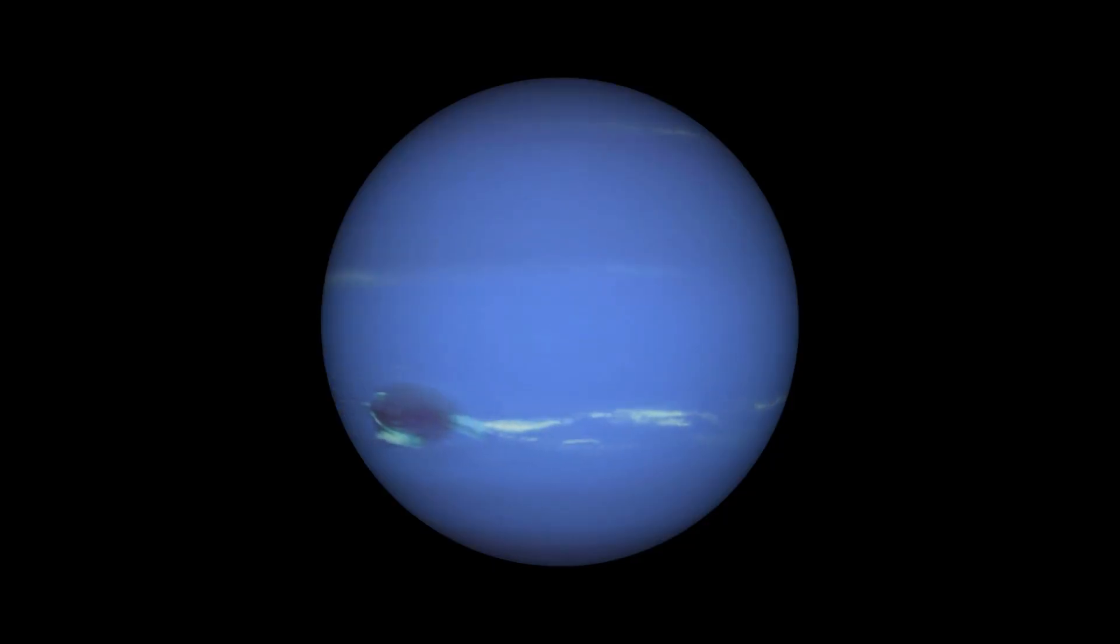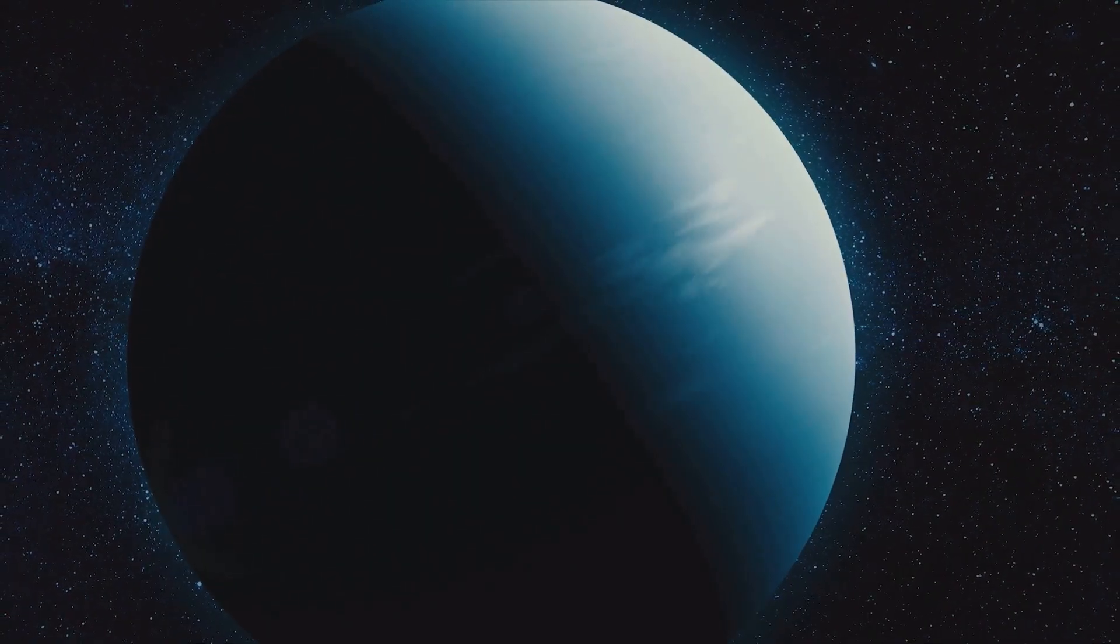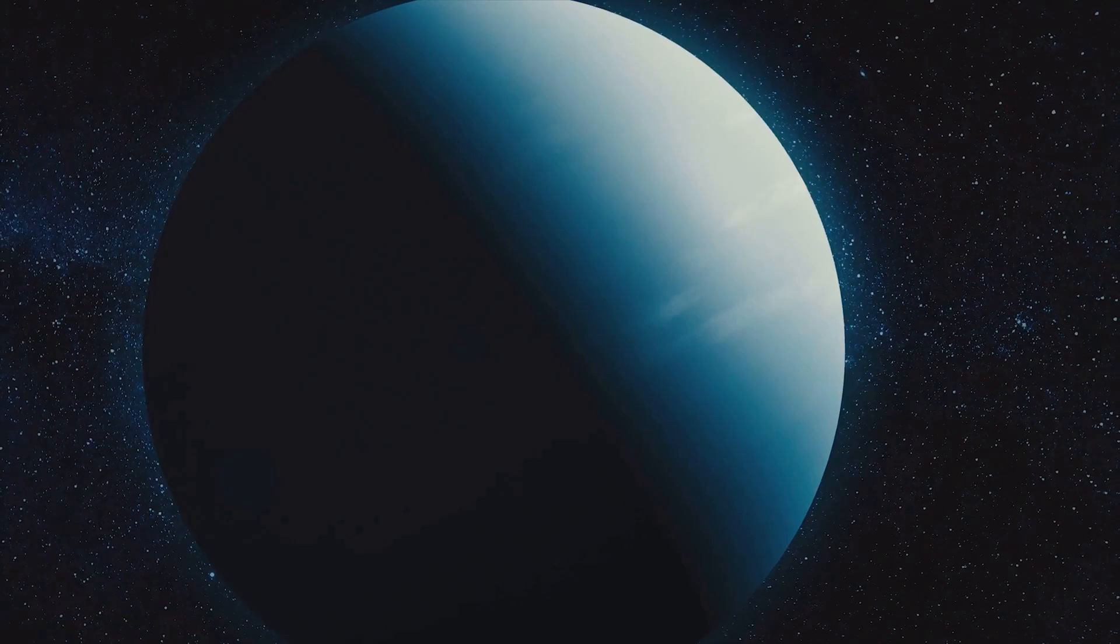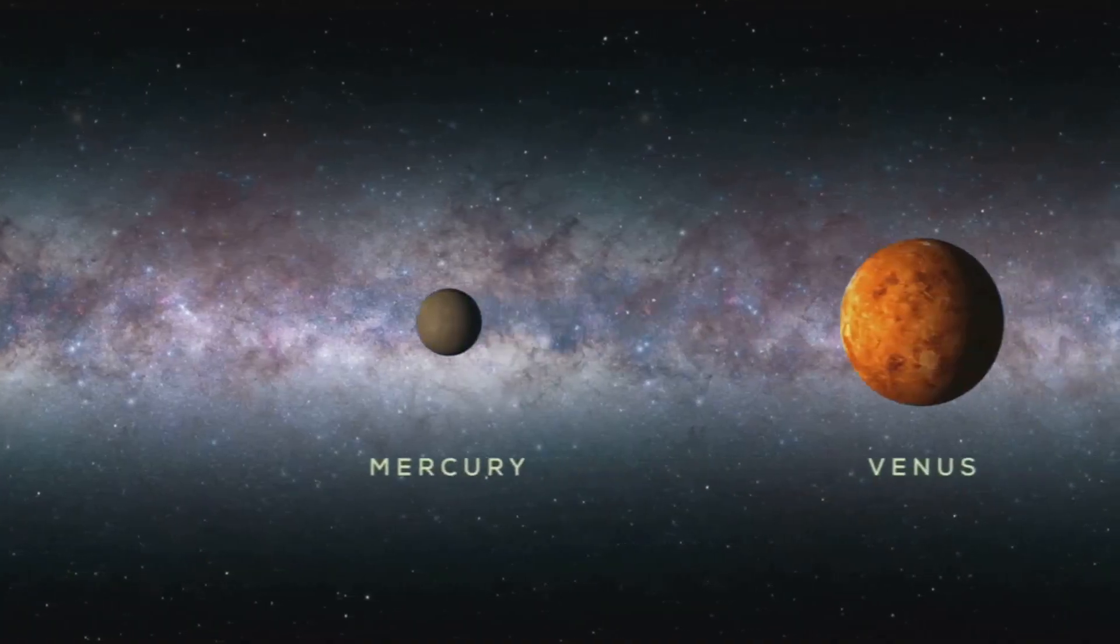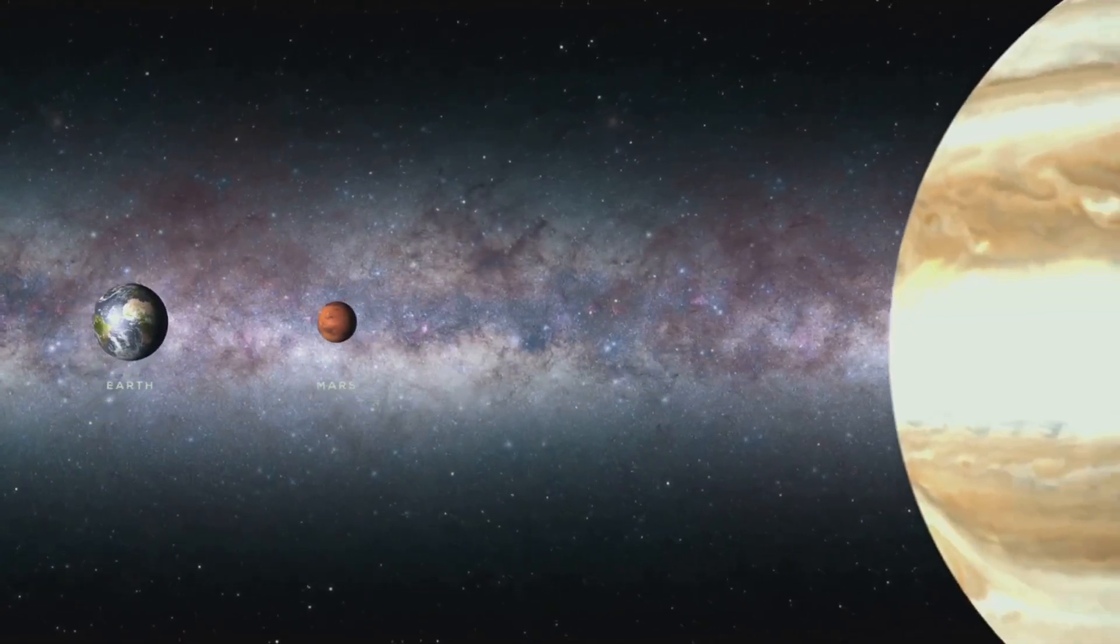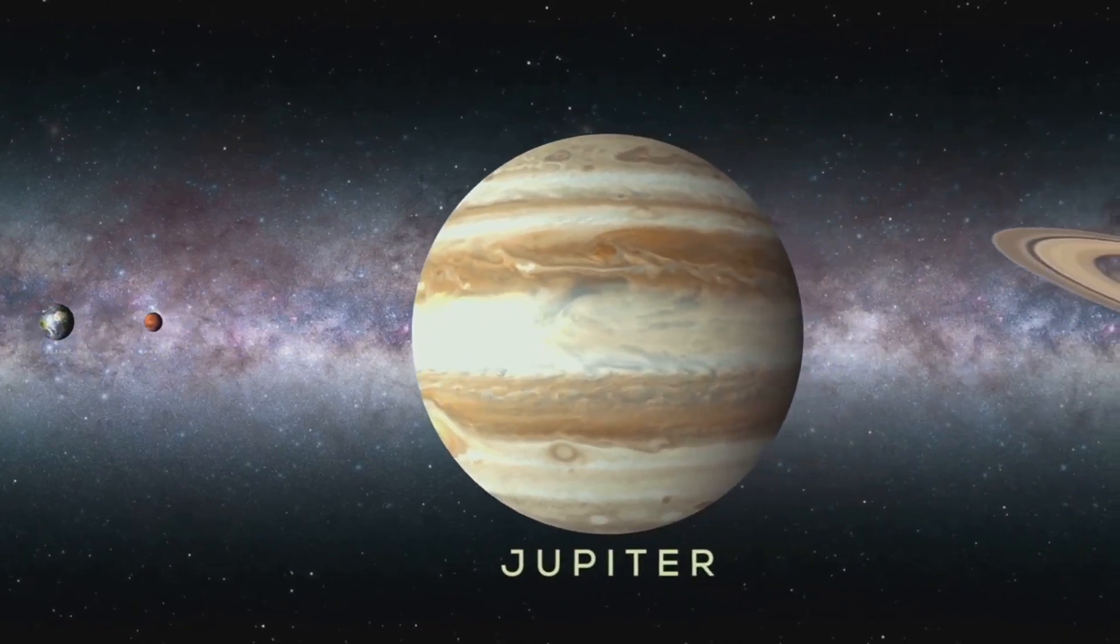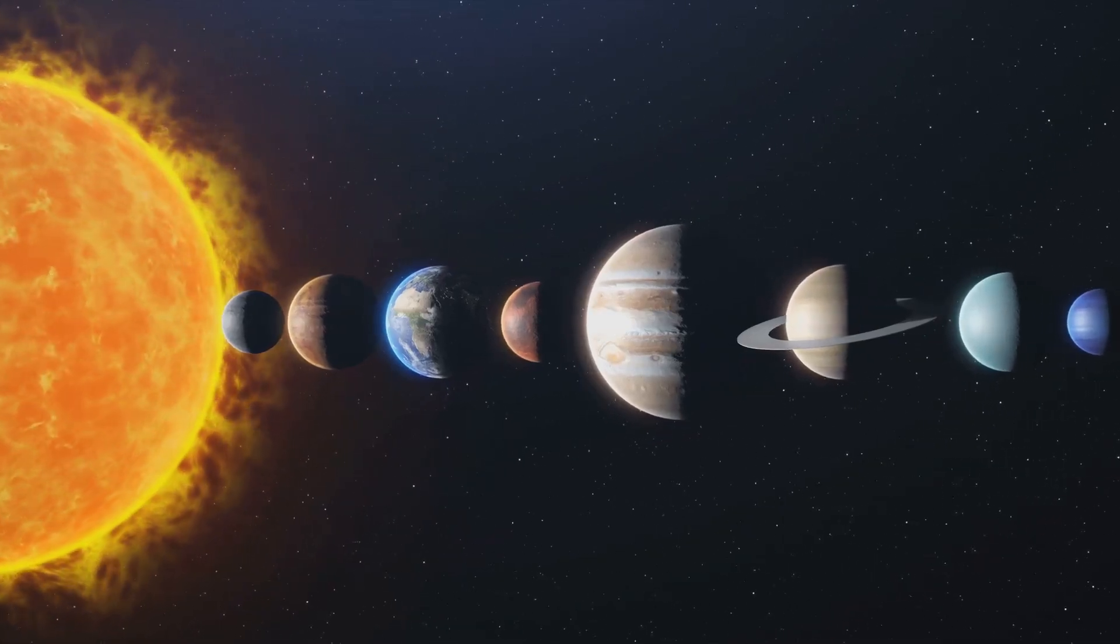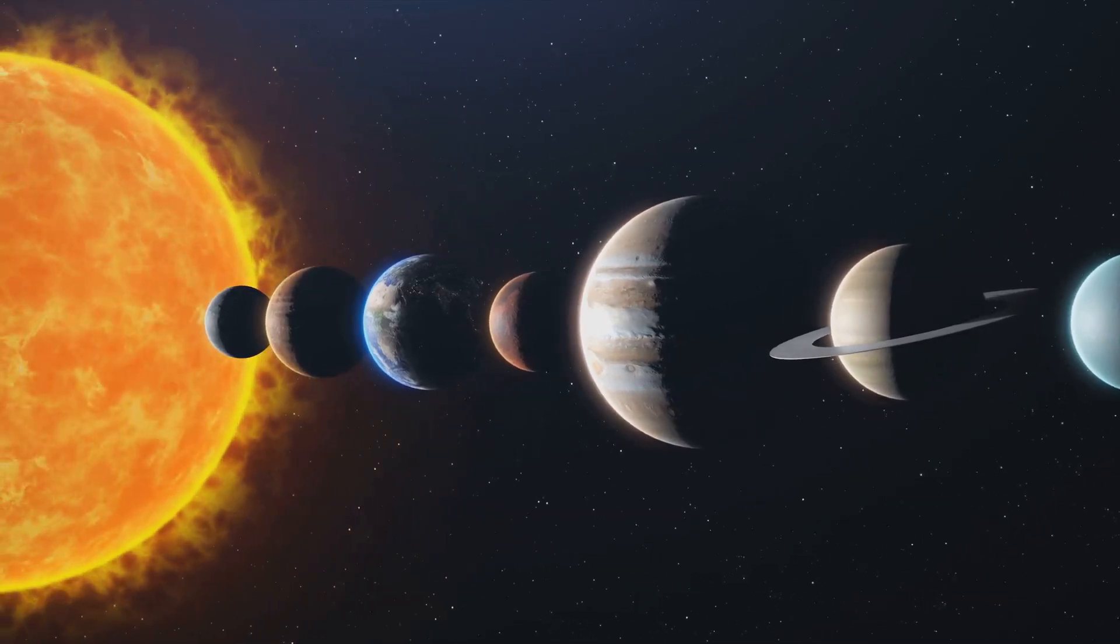Then we come to the outer fringes of our solar system, where we find Neptune and Uranus. These ice giants are still four times the size of Earth. Imagine our planet as a small car. Then Neptune and Uranus would be akin to a large lorry or a city bus. As we traverse the parade of planets, we are humbled by the immense scale of our solar system. Each planet, from the smallest rock to the largest gas giant, is a testament to the enormity of the cosmos. We are but a speck in this grand celestial dance, a tiny blue dot in a sea of stars and planets.